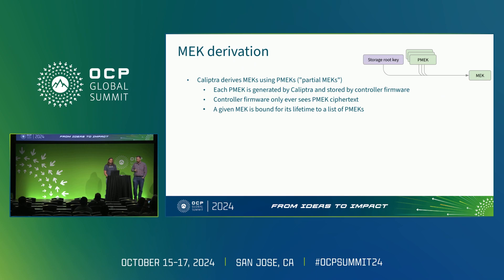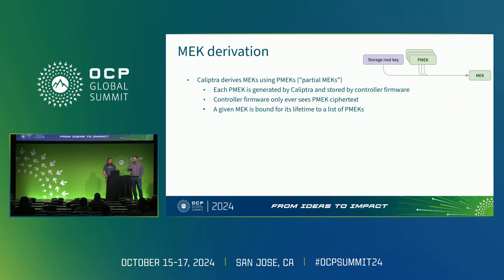How do we derive MEKs? We're introducing the term Partial MEK, or PMEK. Each PMEK represents an external authority who can decide whether to allow the MEK to be derived. Each PMEK is generated by Calyptra and stored at rest by controller firmware — Calyptra itself doesn't have flash to remember things, the controller firmware does. But before the PMEK is ever given back to the controller firmware, it is symmetrically encrypted so that controller firmware never sees the raw PMEK. For the entire lifespan of a given MEK, it is bound to a certain set of PMEKs — could be zero, one, or more. We also have a storage root key owned by Calyptra to provide a baseline level of security.